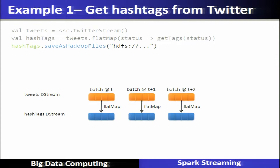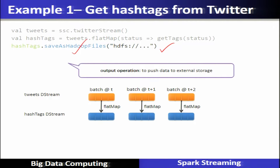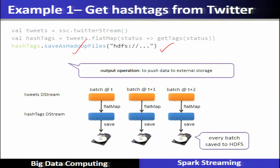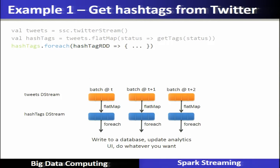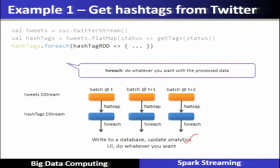After that, these hashtags will be saved into Hadoop as a file. The output operation pushes the transformed hashtag data to external storage. We can also perform various analytics on the transformed hashtag — for example, updating a website or performing other applications depending on what we want to do with the output.